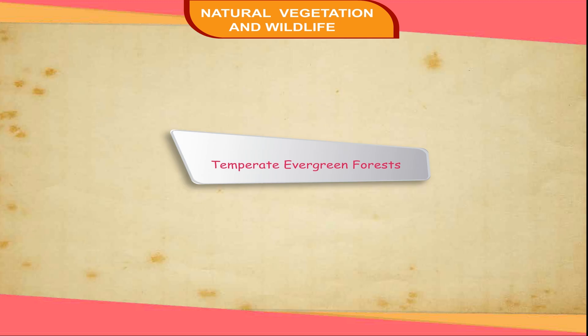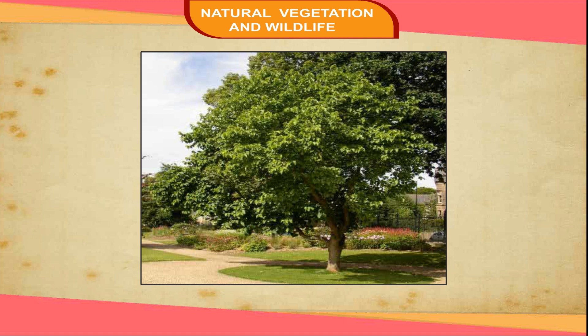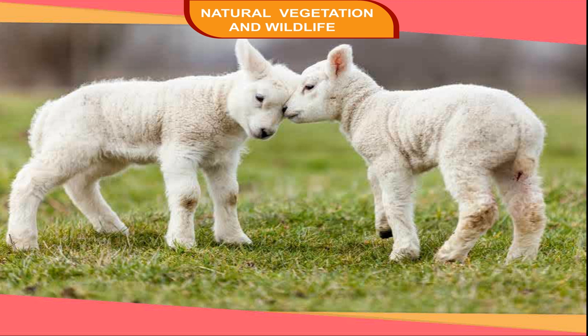Temperate Evergreen Forests. These forests are found in warm temperate areas and have mixed varieties of trees. The plains have mixed deciduous and coniferous vegetation, while the highlands only have softwood coniferous trees. The timber in this area is known for its quality. Important species of trees are pine, oak, eucalyptus, bamboo, and mulberry. Inhabitants of these regions rear cattle, pigs, and sheep, which provide meat, wool, etc. The main areas are the southeastern USA, southern China, and southeastern Brazil.